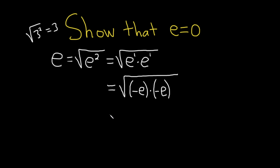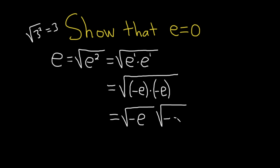The next step: we're going to break this up into two square roots, which again is okay. So this is the square root of negative e times the square root of negative e. The square root of negative e times the square root of negative e is just the square root of negative e times negative e — it's just breaking it up into two square roots.